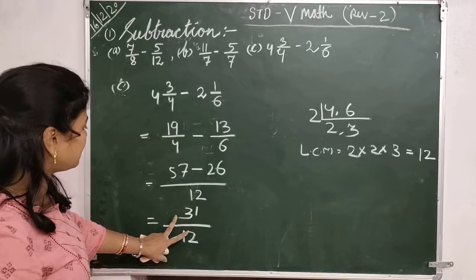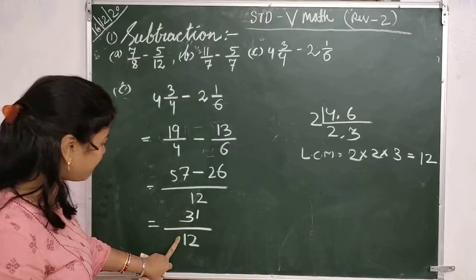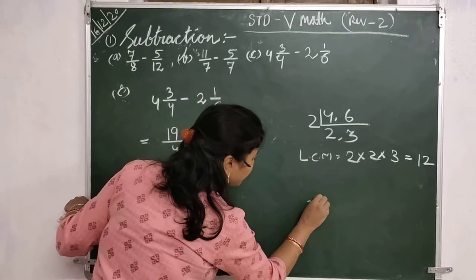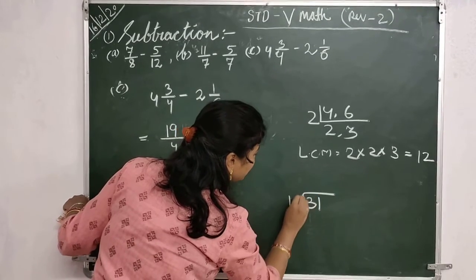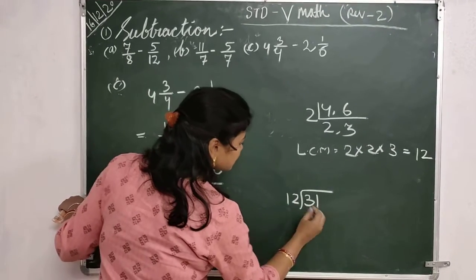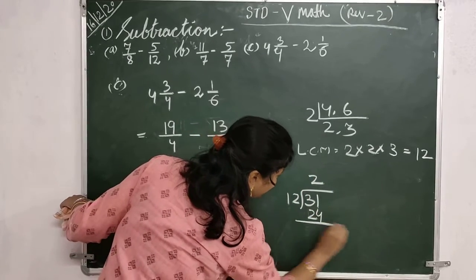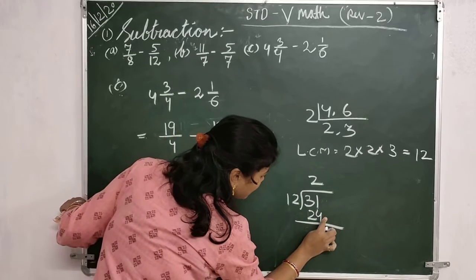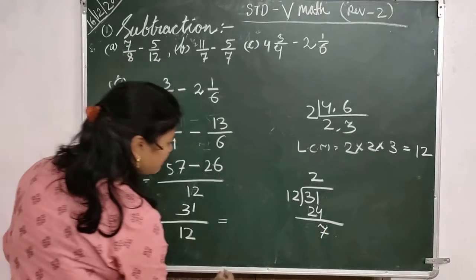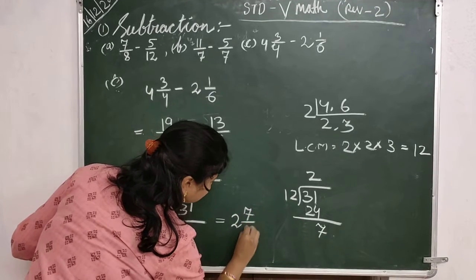So here the answer is 31 by 12. But this fraction is not a proper fraction, so I will change it to a mixed fraction. I will divide 31 by 12: 12 times 2 is 24, and 31 minus 24 is 7. So your answer is 2 and 7 by 12.